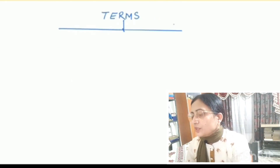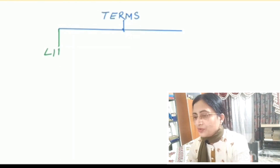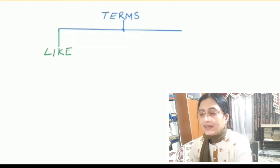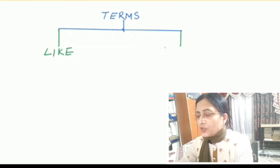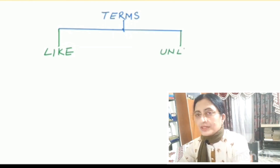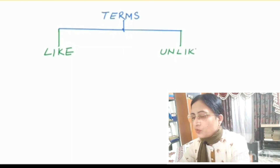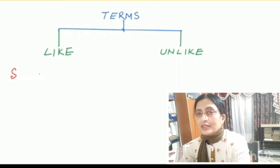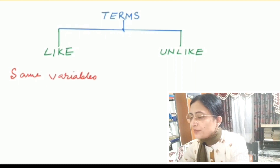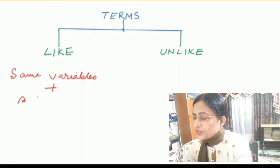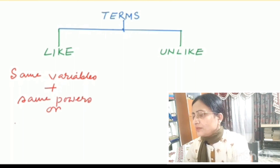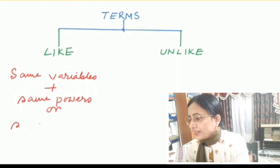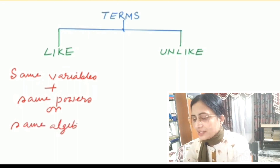There are two types of terms: like terms and unlike terms. Two or more terms are said to be like terms when they have the same variables with the same power of each of those variables, or you may say they have the same algebraic factors.